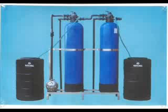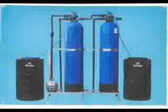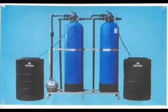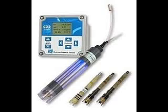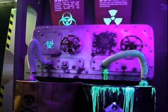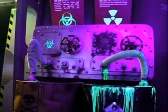Install a point-of-use system — for example, at the kitchen sink — using ionic exchange and/or reverse osmosis water treatment, and use this water for drinking and food preparation. Alternatively, purchase bottled water for drinking and food consumption.